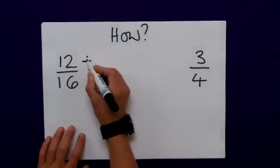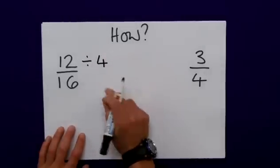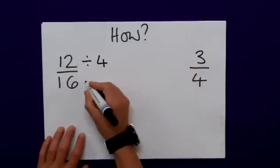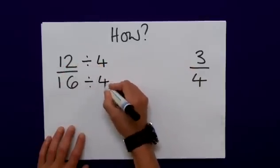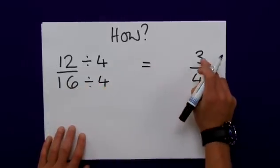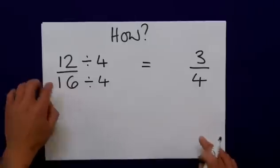So I'm going to do the same to the bottom: 16 divided by 4 is 4, and that is my equivalent fraction. It's much easier to use 3 quarters as opposed to 12 sixteenths.